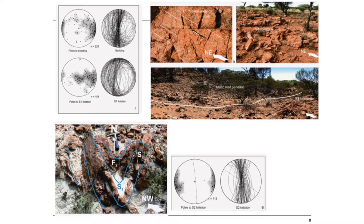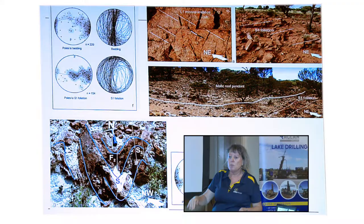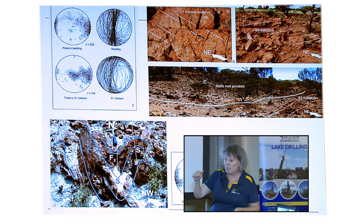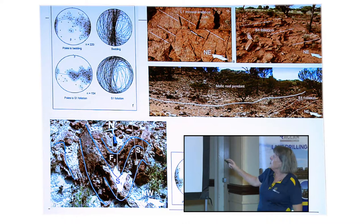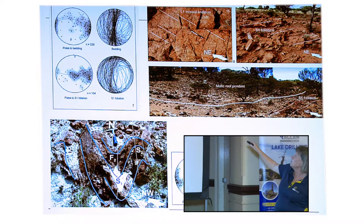At Agnew, wrapping around the Agnew granitic complex is a layer-parallel S1 foliation. You'd see it really well in the Leonora area as well. It's seen throughout the eastern goldfields and is associated with early recumbent folds—the foliation is axial planar to those recumbent folds. You'll often see a mineral lineation on that surface, generally plunging gently to the north. The foliation is well developed in the carapace of the granite but disappears as you go into the granite, so it's a superficial fabric.